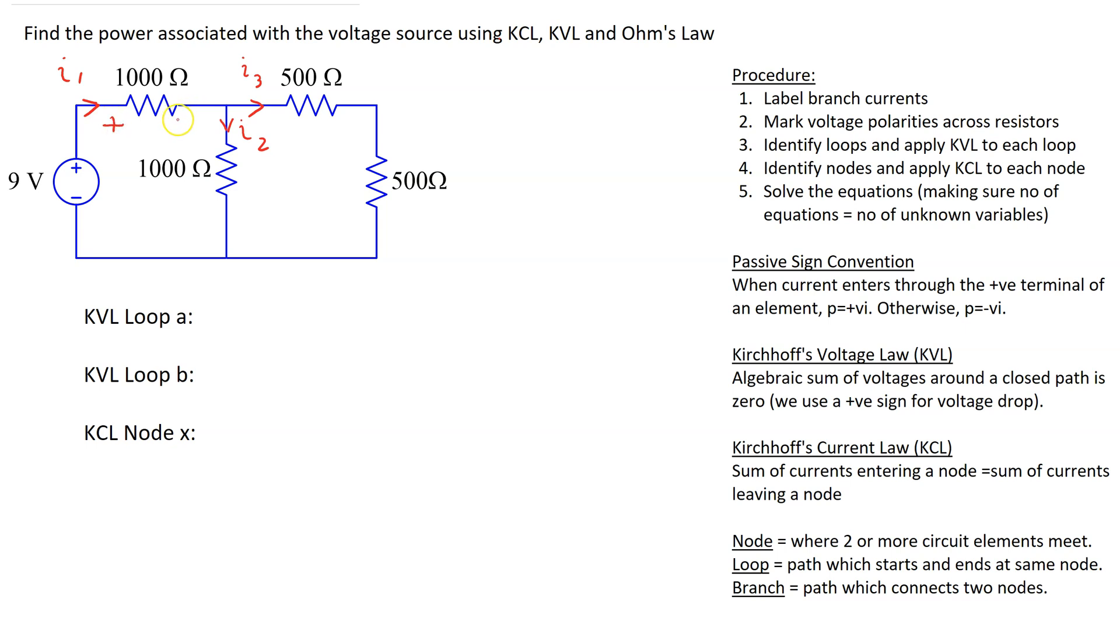And the end where the current leaves is lower potential and marked negative. Similarly for this resistor through which I2 flows we can mark the voltage polarity as follows. For these two resistors for current I3 we can mark the polarity as follows.